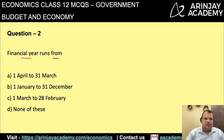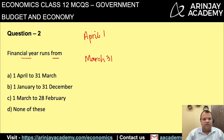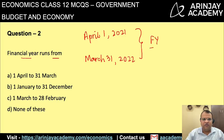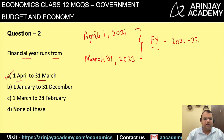In India, the financial year is a period of 12 months which begins on April 1 and ends on March 31. For example, April 1, 2021 to March 31, 2022 is called financial year FY 2021-22. The period of the financial year runs from 1st April to 31st March, and therefore A is the right answer.